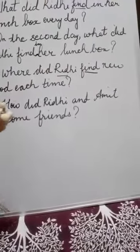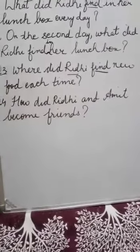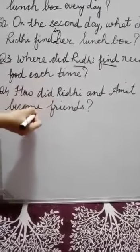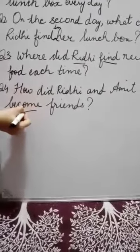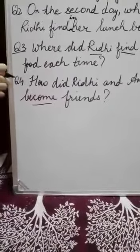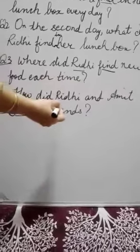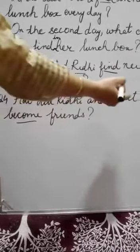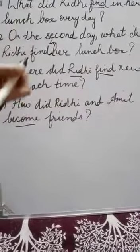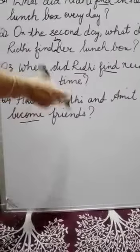Last question: how did Rithi and Amit become friends? Again, 'did' is written, so the verb changes — become becomes 'became.' How did Rithi and Amit become friends? Rithi and Amit shared their lunch every day and they became friends.